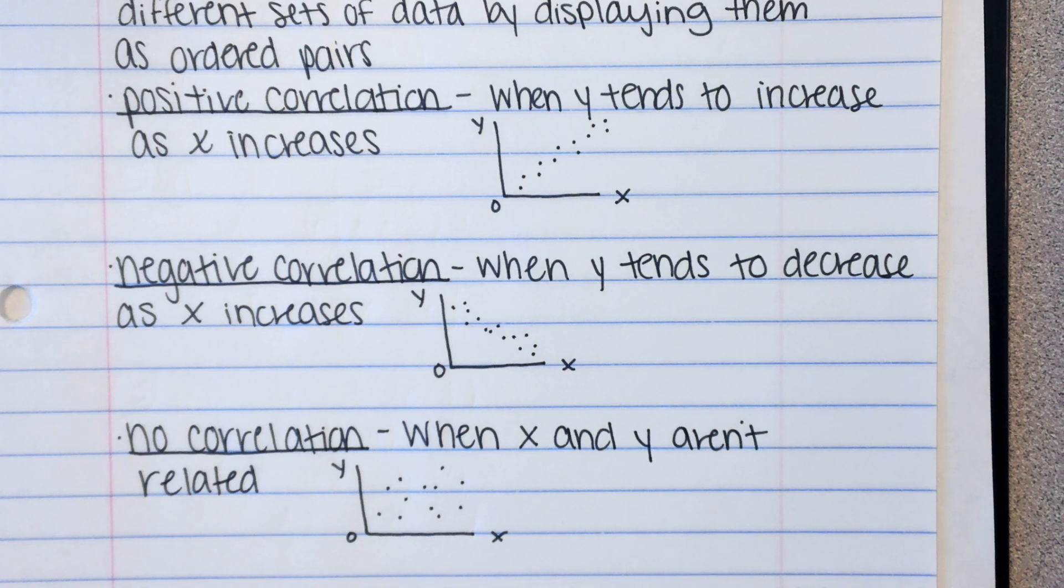Now, in your homework, you are going to have to look at a graph and decide if it's positive, negative, or no. You're also going to have to think about some scenarios and decide if you think it would be a positive correlation, a negative correlation, or no correlation. So an example of a positive correlation might be as temperatures increase, so do ice cream sales. So as it gets warmer, so both are increasing.